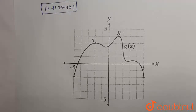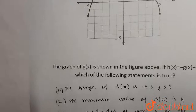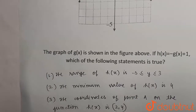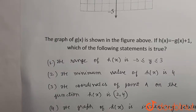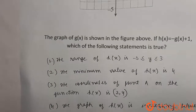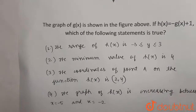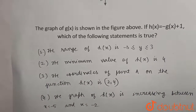Hello everyone. The question is: the graph of h(x) is shown in the figure above. If h(x) is equal to minus g(x) plus 1, then which of the following statements is true? The options are: the range of h(x) is minus 3 less than or equal to h(x) less than or equal to 3; the minimum value of h(x) is 4; the coordinates of point A on the function h(x) is (2, 4); and the graph of h(x) is increasing between x equal to minus 5 and x equal to minus 2.